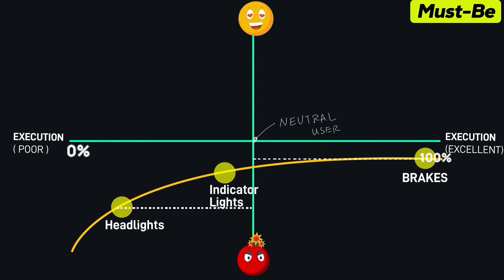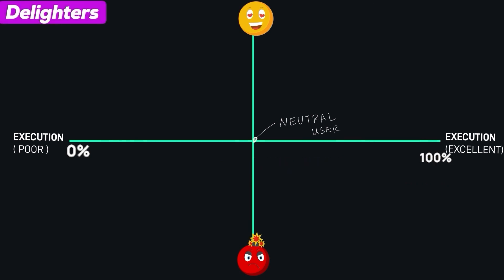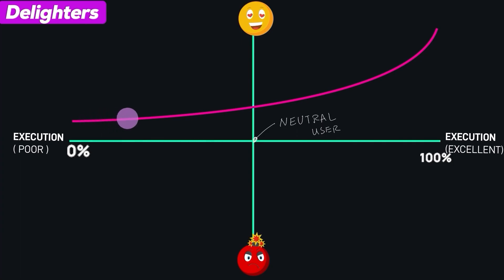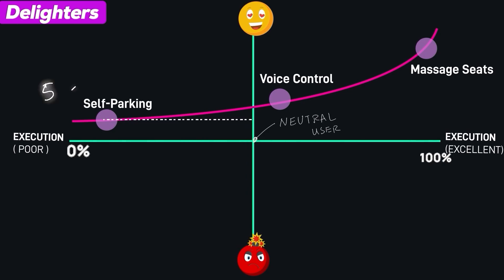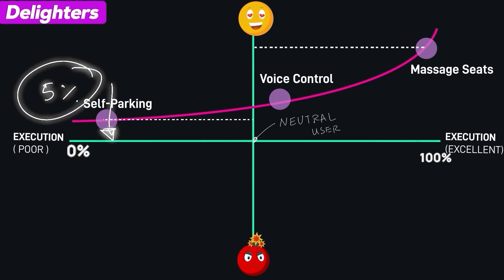The last type is delighters, or excitement needs. These are unexpected features that surprise and delight customers, leading to a high level of satisfaction. If they are not present, customers may not mind, as they did not expect them. That's why when they are poorly executed or not executed at all, the customer's happiness level does not go below neutral. Examples of delighters in a car include self-parking, voice control, and massage seats. Massage seats that are fully executed give 100% satisfaction to a customer. The self-parking system, even if executed very poorly, still does not make the customer unhappy — the happiness level remains at neutral.